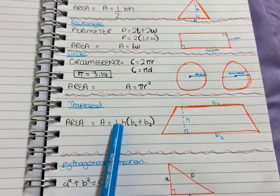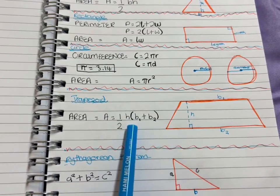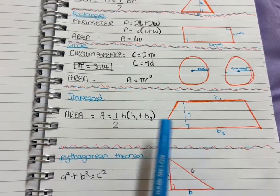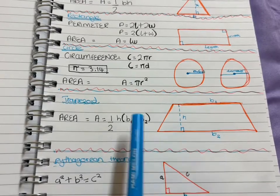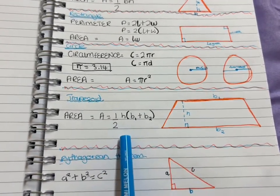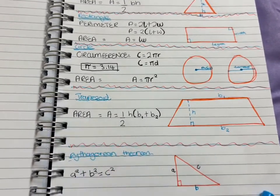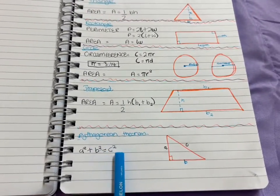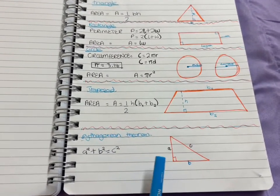To find the area, I believe it's just all clear to you guys—half base times high. B1 is your b1, your b2 is the bottom, your height is right there. Multiply all of that with the half and get your answer for the area.